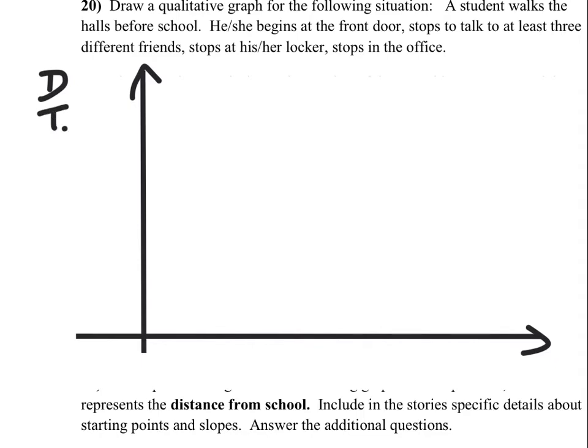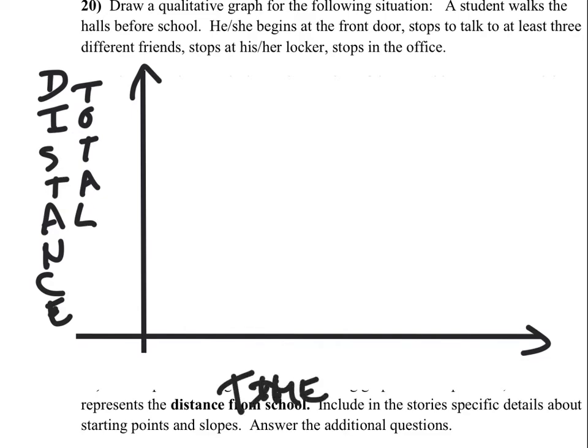So this is total distance walked. And that will depend on how much time has passed. Well, total distance, time zero. We'll say this is when a student walks the halls before school. So this is maybe getting to school or sometime before school. Get to school.